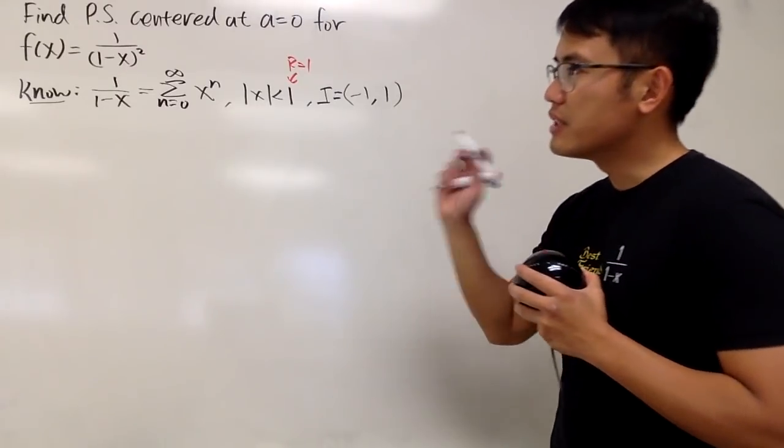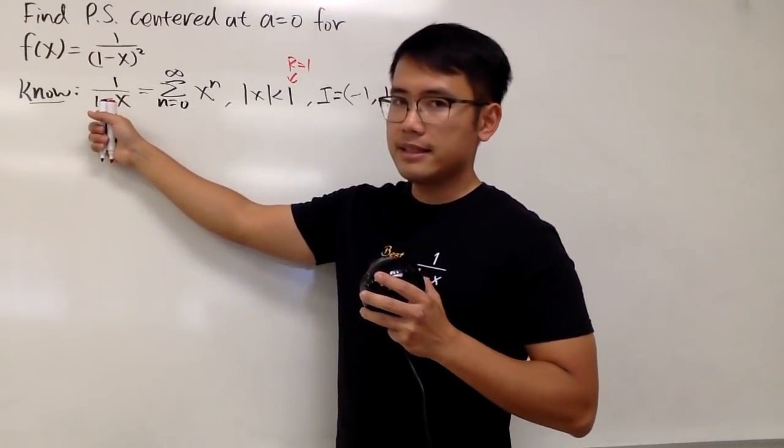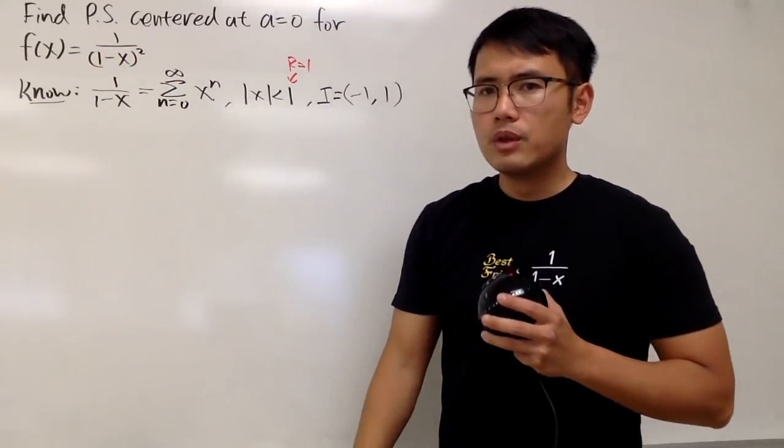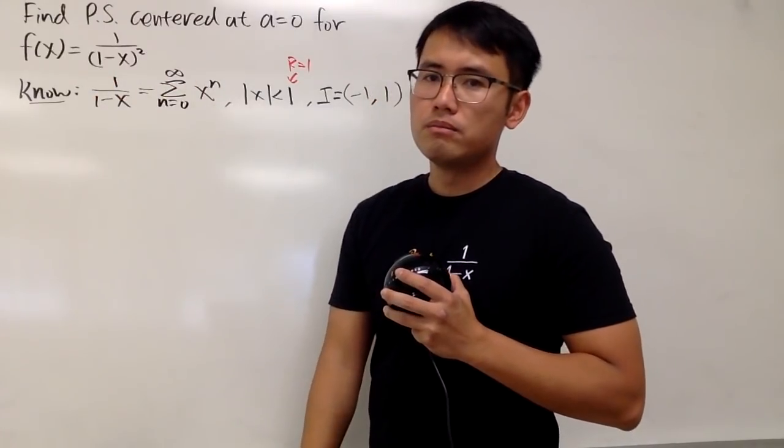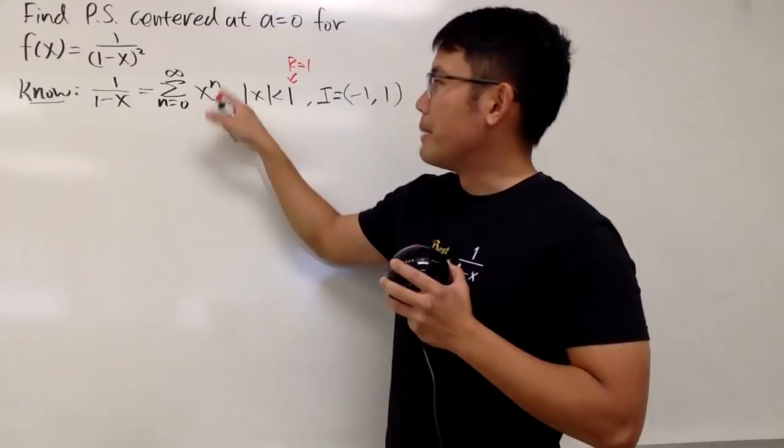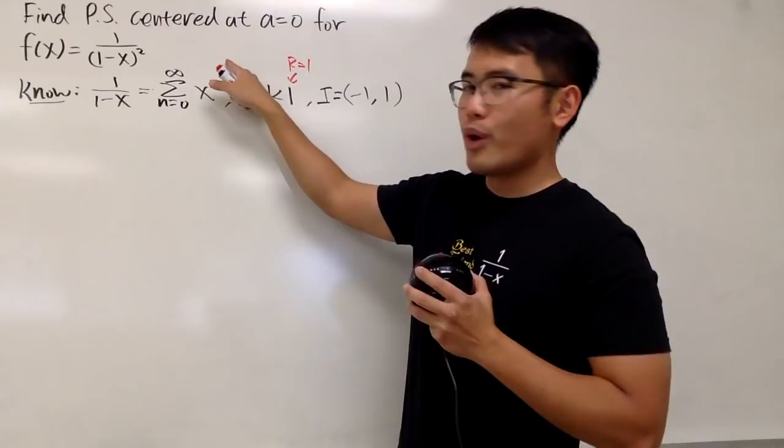Now, check this out. How can we go from 1/(1-x) to 1/(1-x)²? You might be thinking, can we just square both sides? Technically yes, but it's going to be harder to do, because when you square a power series, remember you have to put parentheses and then square.